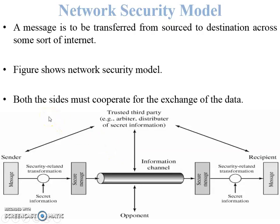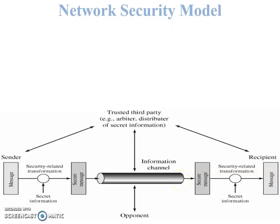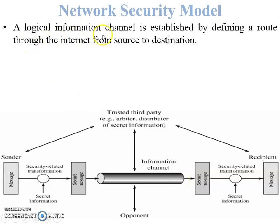Both sides must cooperate for exchanging data. Whenever data passes from sender to receiver, both create one logical information channel. A logical information channel is established by defining a route through the internet from source to destination — this is the network route between the two users, the sender and the receiver.